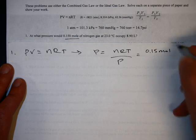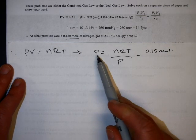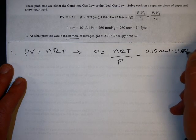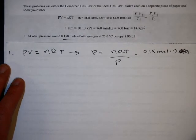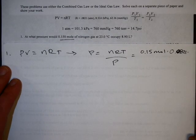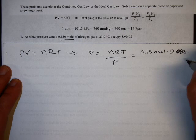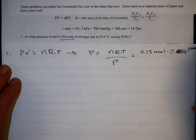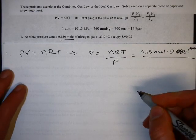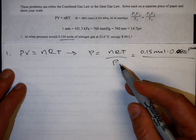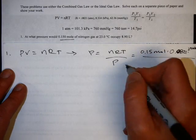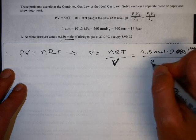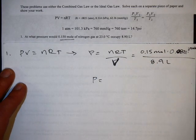The N is 0.15 moles. The R, you can pick because you're solving for pressure. Any R you pick will be fine. I like to do 0.0821. The temperature is 23 degrees Celsius, 23 plus 273 is 296 Kelvin. Then you divide by the volume, which is 8.9 liters.